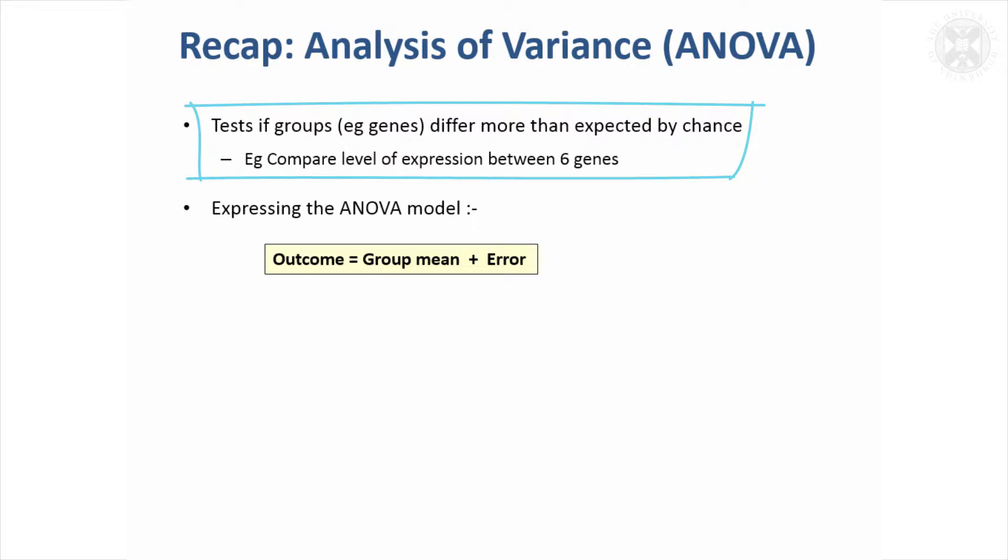If you do an analysis of variance and you're trying to test data that are grouped in some way, for example we had a set of expression data on genes last time, we're trying to see if the groups differ more than expected by chance.